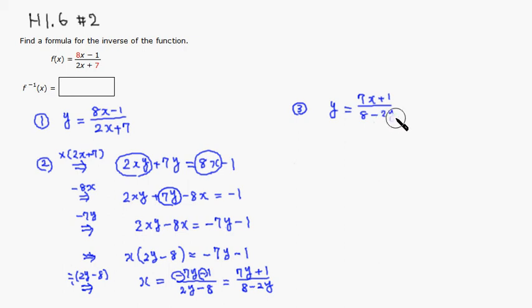Oh, sorry. So y, I'm going to put x. Alright, then the last step, 4. We replace y by f inverse of x, which is equal to 7x plus 1 over 8 minus 2x.